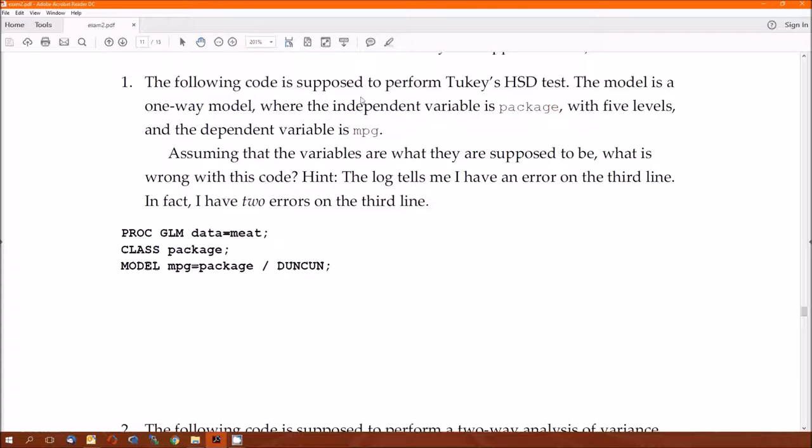Let's figure out some things that are wrong here. The following code is supposed to perform Tukey's HSD test. Models a one-way model because there's one independent variable here. Where the independent variable is package with five levels. Dependent variable is mpg. So the variables are what they're supposed to be. What's wrong with this code? Log tells me I have an error on the third line. Duncan is spelled incorrectly. It's even worse than that, because if we spelled Duncan correctly, we'd be doing the Duncan multiple range test. And I specifically said I want Tukey. Other thing that's wrong is that the Duncan option doesn't belong on model. It belongs on the means statement. So you'll have to have a means package and then slash Tukey. So there are two things here to pick up on. One was it needs a means statement. And the second thing is you need Tukey instead of Duncan.